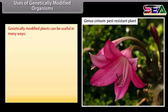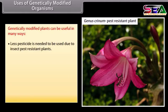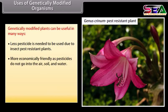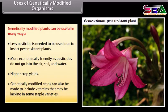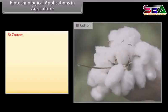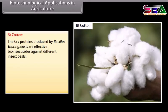Genetically modified plants can be useful in many ways: less pesticide is needed due to insect pest resistant plants; they are more environmentally friendly as pesticides do not go into the air, soil, and water; and they produce higher crop yields. Genetically modified crops can also be modified to contain additional vitamins and nutrients that may be lacking in some staple varieties.